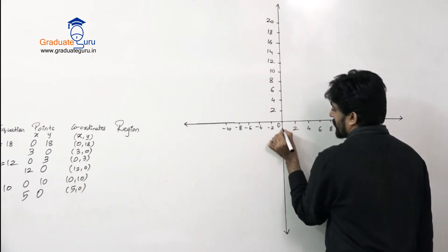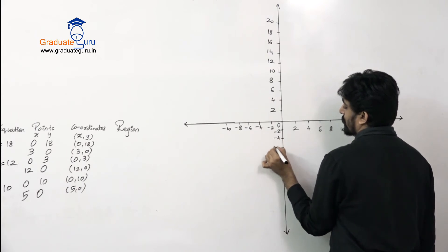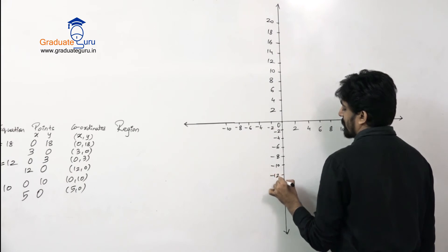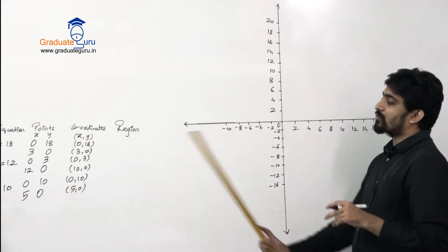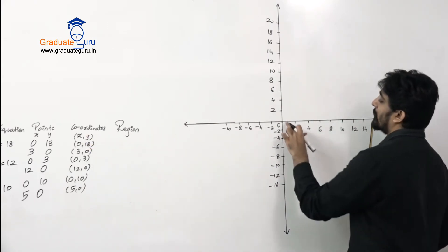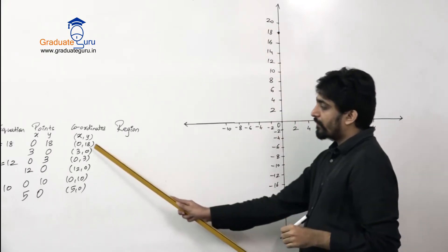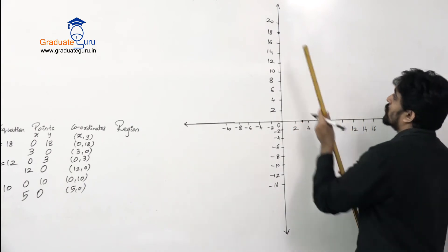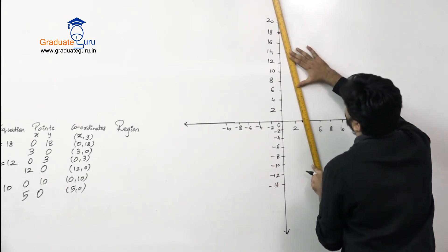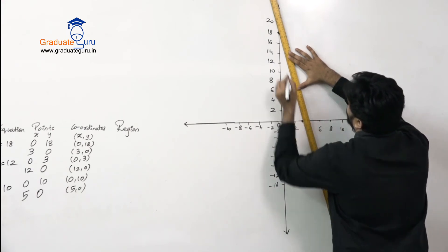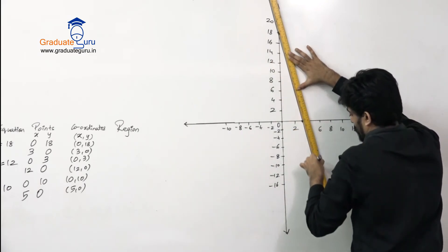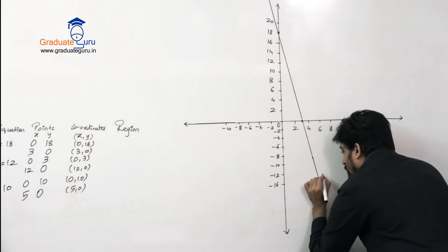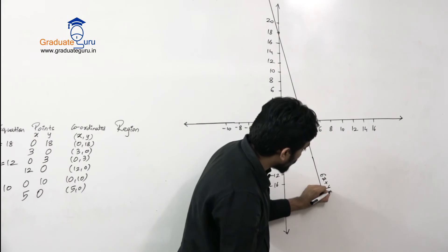We also mark the negative sides: minus 2, minus 4, minus 6, minus 8, minus 10, minus 12, minus 14, minus 16. Now plotting the points: (0, 18) means 0 on the x-axis and 18 on the y-axis — that's this point. We draw a line through (3, 0) and (0, 18), and label it as 6x plus y is equal to 18.